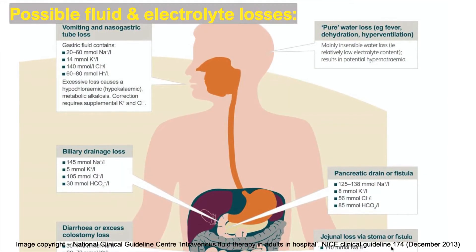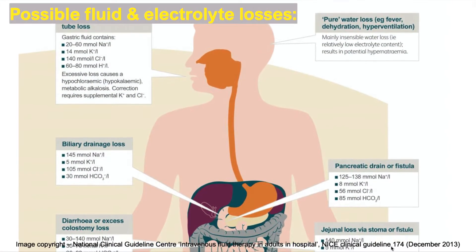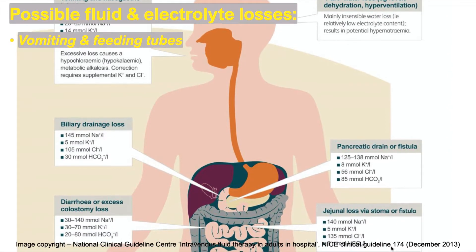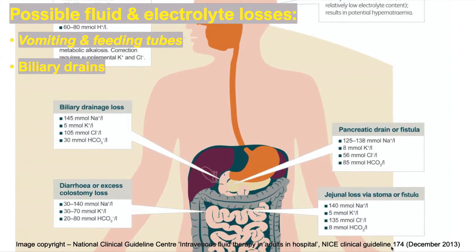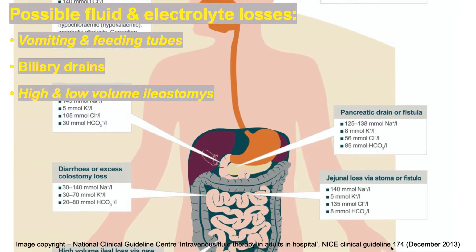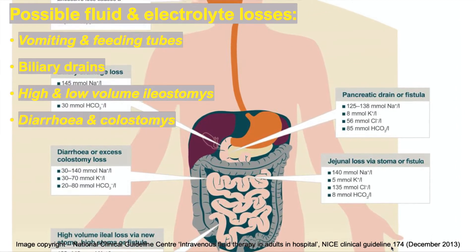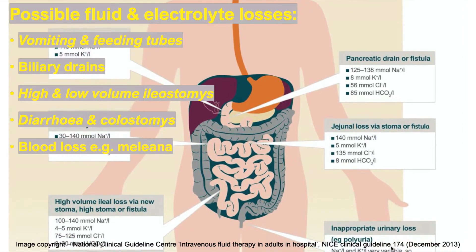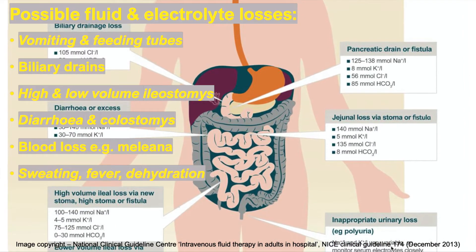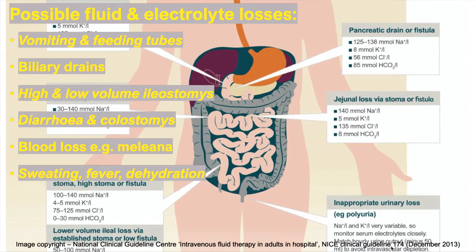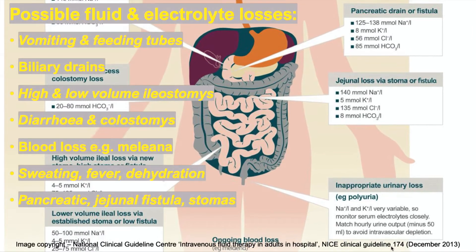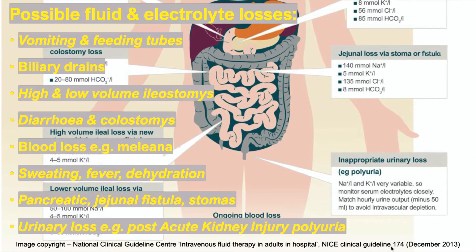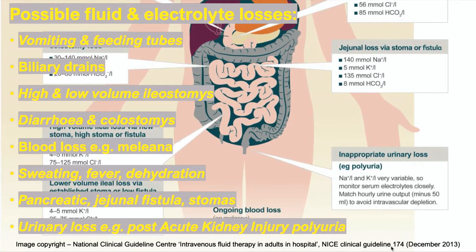For replacement, areas of possible fluid and electrolyte losses are: vomiting and NG tube losses, biliary drainage losses, high volume ileal stoma loss, diarrhoea or excess colostomy loss, ongoing blood loss due to melaena, sweating, fever and dehydration, pancreatic, jejunal fistula and stoma losses, and urinary losses — for example, post-AKI polyuria.